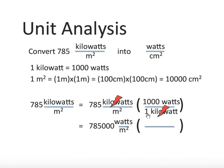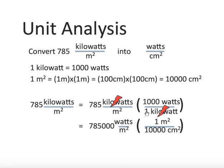We multiply by another fraction, this time converting square meters into square centimeters. The question is: do I write 1 meter squared over 10,000 centimeters squared, or 10,000 centimeters squared over 1 meter squared? We want to cancel out the meter squared and be left with centimeters squared, so the meter squared units cancel. Notice that we're dividing by 10,000, not multiplying. We're left with 78.5 watts per square centimeter.